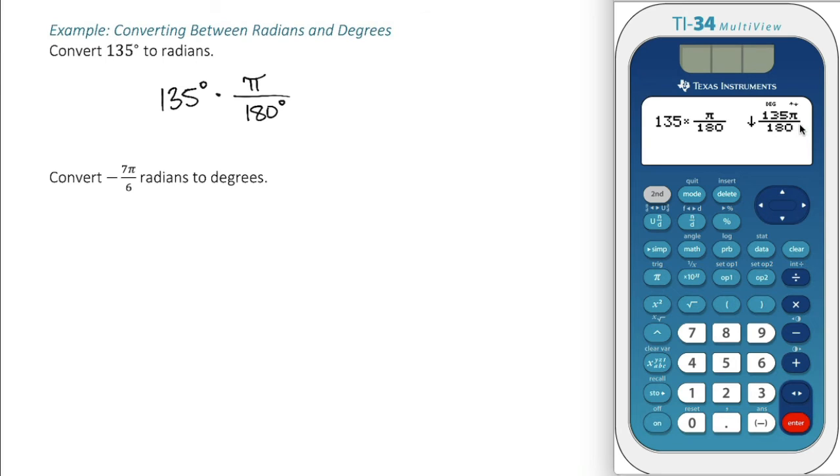That gives us 135 pi over 180, which obviously reduces.